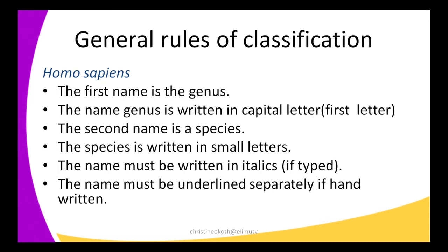The last rule: the name must be underlined separately if handwritten. In our case it is not handwritten, but if it is handwritten, each name has to be underlined separately — for example, you underline Homo separately and sapiens separately.